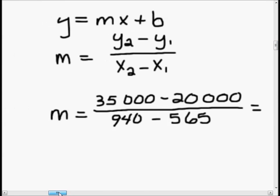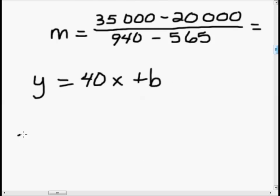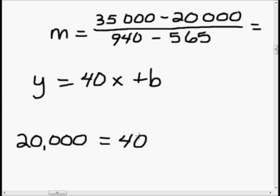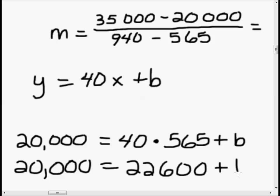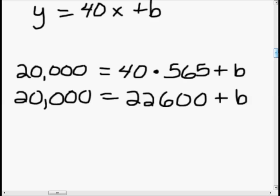Now we've got to figure out b. We know y equals 40x plus b. The easiest way to find b is to plug in values we know. So let's plug in where y equals 20,000 — the case where they print 20,000 copies — equals 40 times 565 plus b. That gives us 20,000 equals 22,600 plus b. We subtract 22,600 from both sides and get negative 2,600 equals b. So b equals negative 2,600.